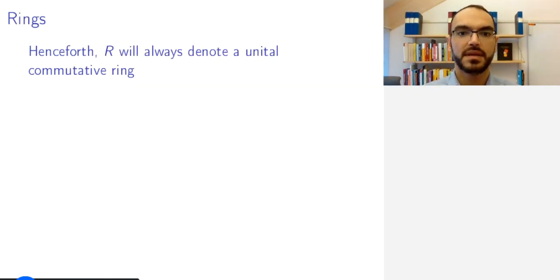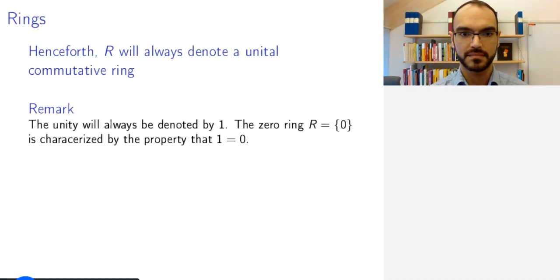From now on whenever I write the capital letter R I refer to a unital commutative ring and the unity will always be denoted the number one. One particular kind of ring is the zero ring, the ring consisting of only one element, characterized by the property that one equals zero. If in a ring one equals zero then it is the zero ring, and in all other rings one is different from zero.